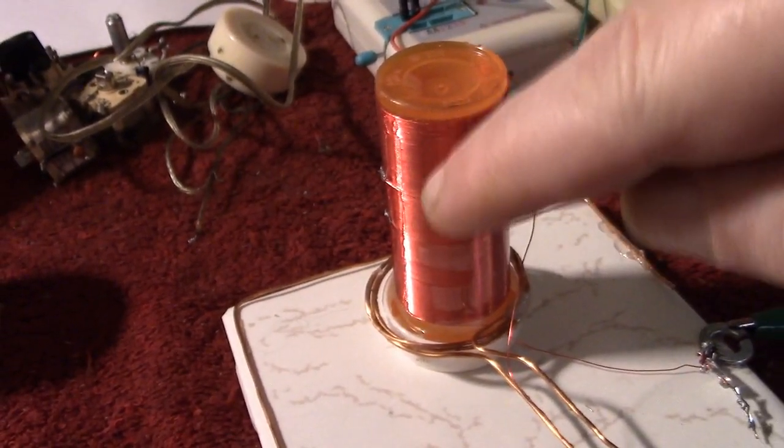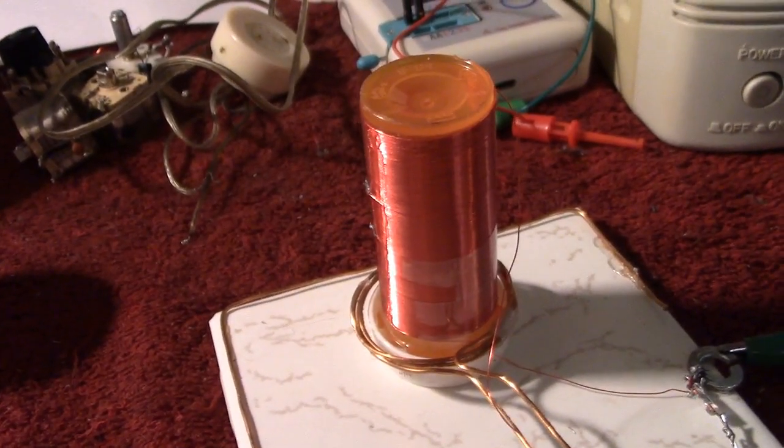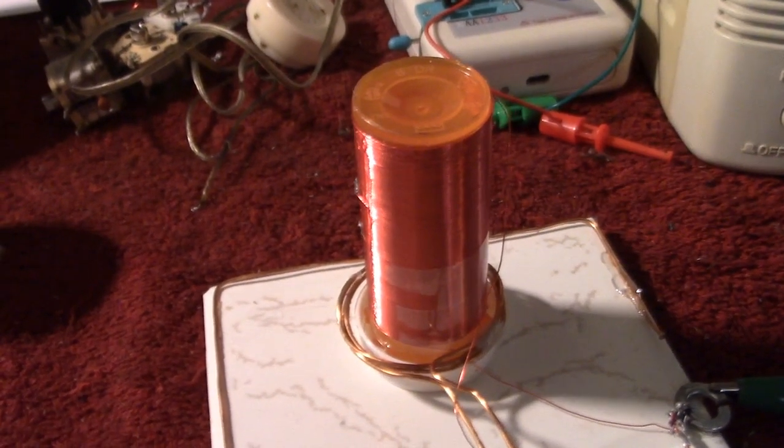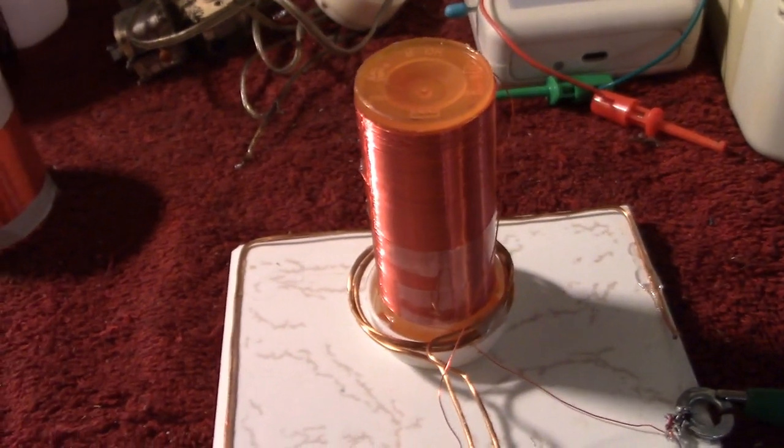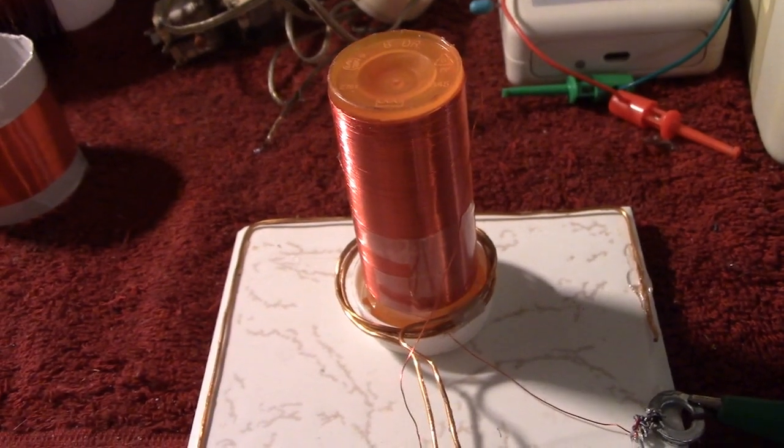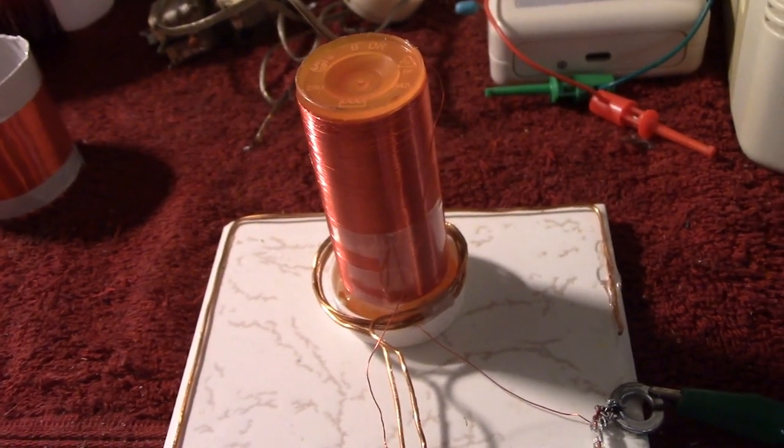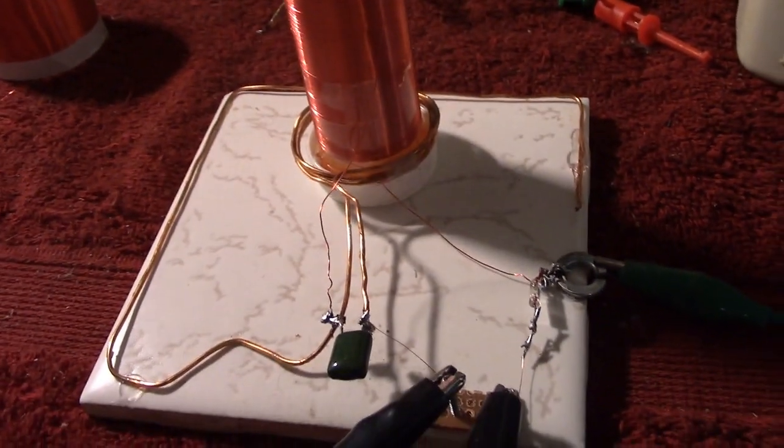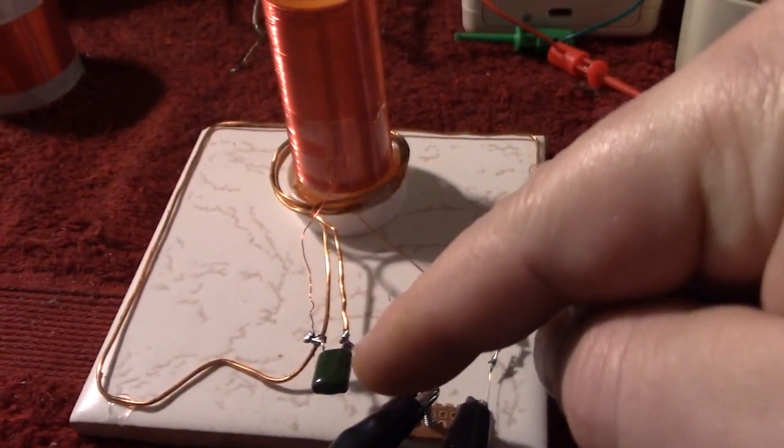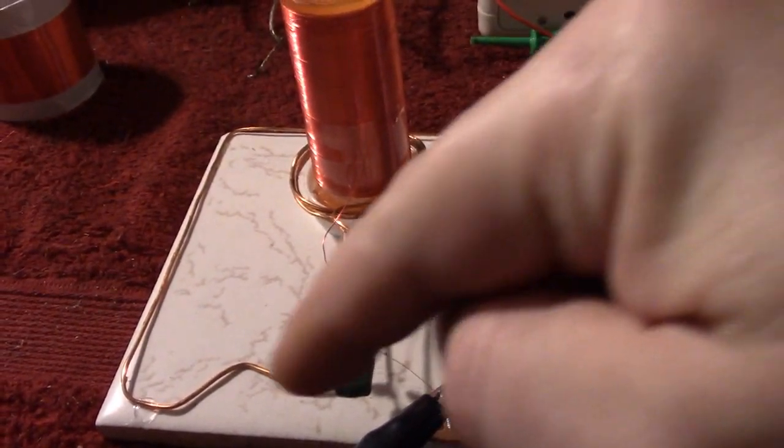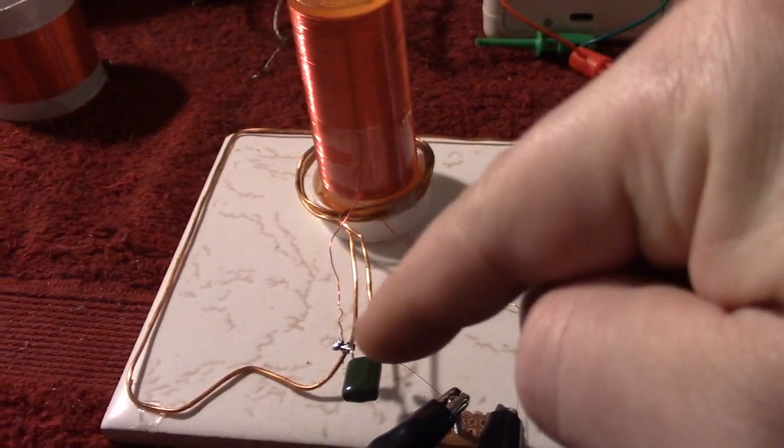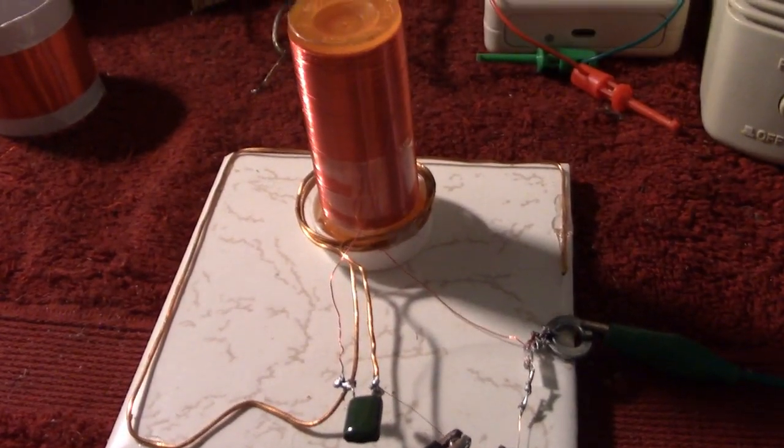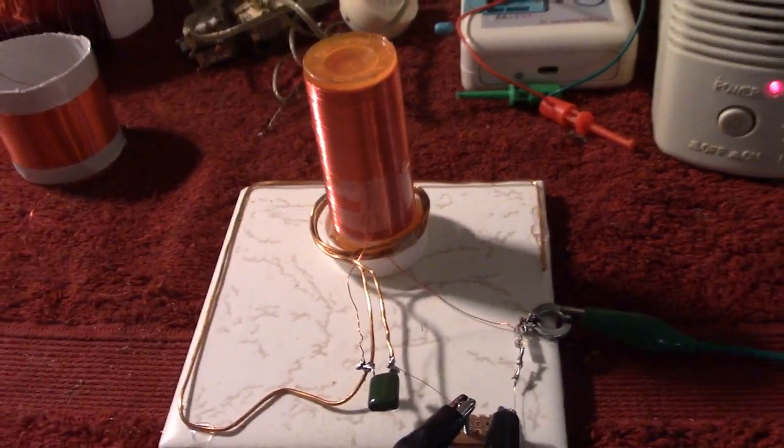And then if I wound 180 turns of 30 gauge on a thin pills bottle I actually got reception of KBIX. And then I also found out if I put the three turns around and I put a capacitor across there, added a small amount of wire on that line there, then the signal was further improved.